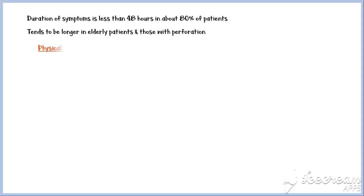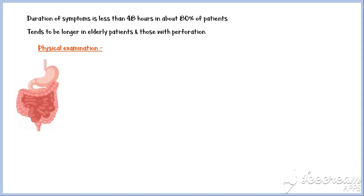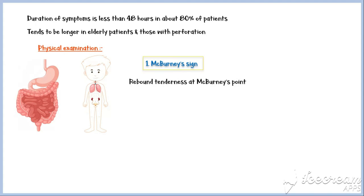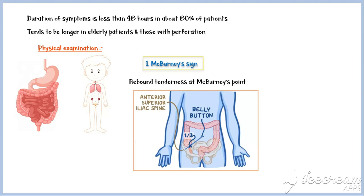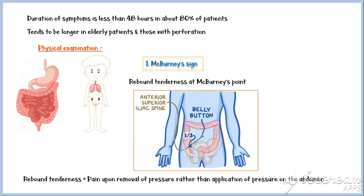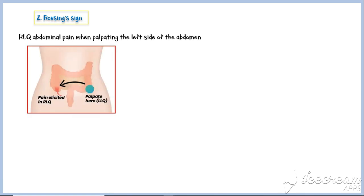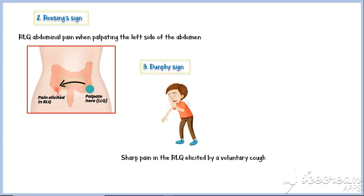A careful physical examination is essential in patients with suspected appendicitis. Most importantly, the gastrointestinal, genitourinary, and respiratory systems should be evaluated. Most important physical examination findings include the following. McBurney's sign, characterized by rebound tenderness at McBurney's point, located one-third the distance from the right anterior superior iliac spine to the umbilicus. Rebound tenderness is pain felt upon removal of pressure rather than application of pressure on the abdomen. Rovsing's sign is pain elicited in the right lower quadrant when palpating the left side of the abdomen. Dunphy's sign is characterized by sharp pain in the right lower quadrant elicited by a voluntary cough, which may suggest an ongoing localized peritonitis.